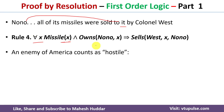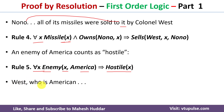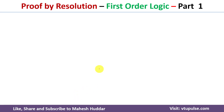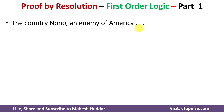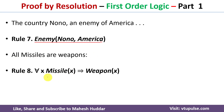The next statement is: an enemy of America counts as hostile — ∀x Enemy(x, America) → Hostile(x). West is an American: American(West). The country Nono is an enemy of America: Enemy(Nono, America). Finally, all missiles are weapons: ∀x Missile(x) → Weapon(x). This completes converting all statements into first order logic.